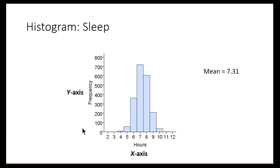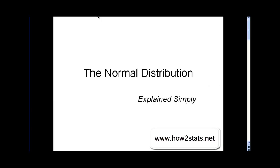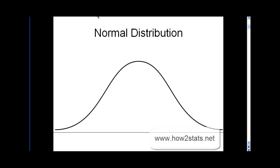The mean for these data is 7.31, and the standard deviation — the measure of average dispersion — is 1.21. So with knowledge of the mean, the standard deviation, and a histogram, you should be able to appreciate this video. In this video, I'm going to talk about the normal distribution, explain what it is by looking at an ideal example and its properties, and then give an example of a real-world normal distribution.